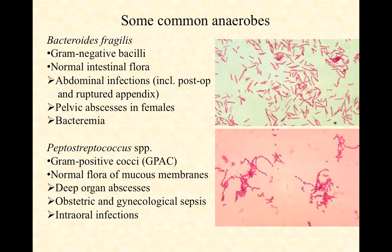At first blush, bacteremia in blood might sound weird because blood carries oxygen around. However, our venous blood has little to no oxygen, and our arterial blood has very little free dissolved oxygen. The majority of it is bound to hemoglobin on red blood cells, and so the blood, for the most part, is actually a relatively anaerobic habitat from a microbial standpoint.